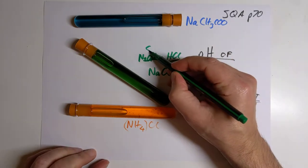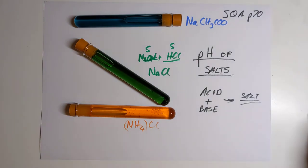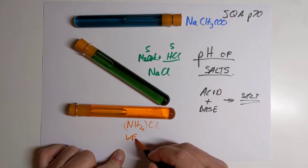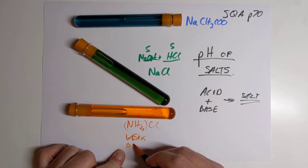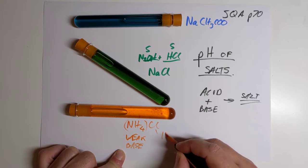So we have got a strong base and a strong acid. And you can see the pH is neutral. Down here, we have got a weak base. That was ammonia. And a strong acid, which would have been hydrochloric acid.